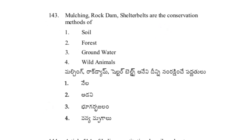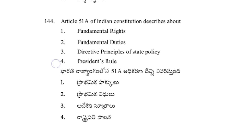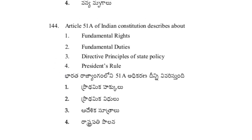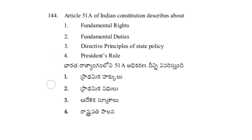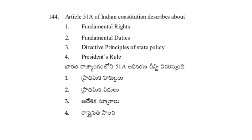Mulching, rock dams, and shelter belts are the conservation methods of soil — option 1, answer. Article 51A of the Indian Constitution describes fundamental duties — option 2, answer.